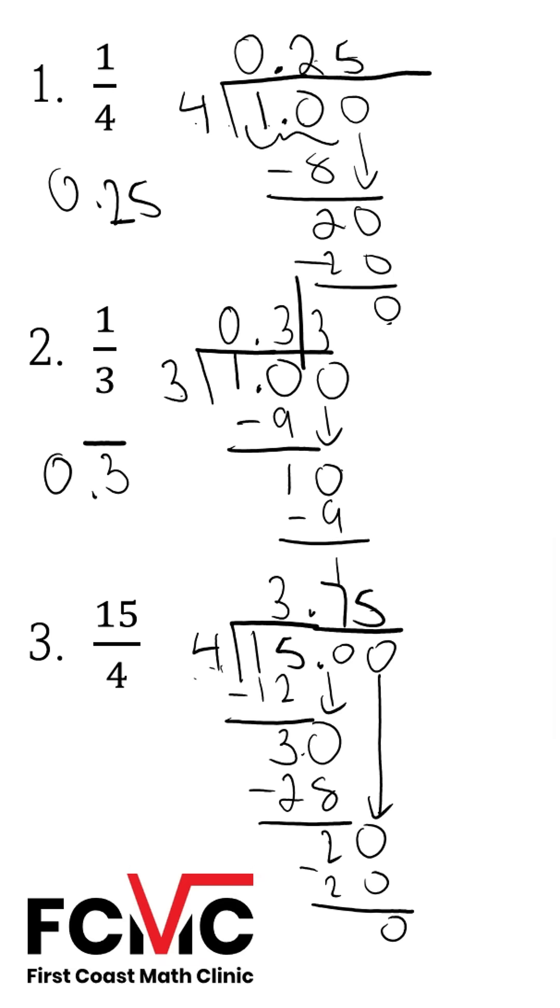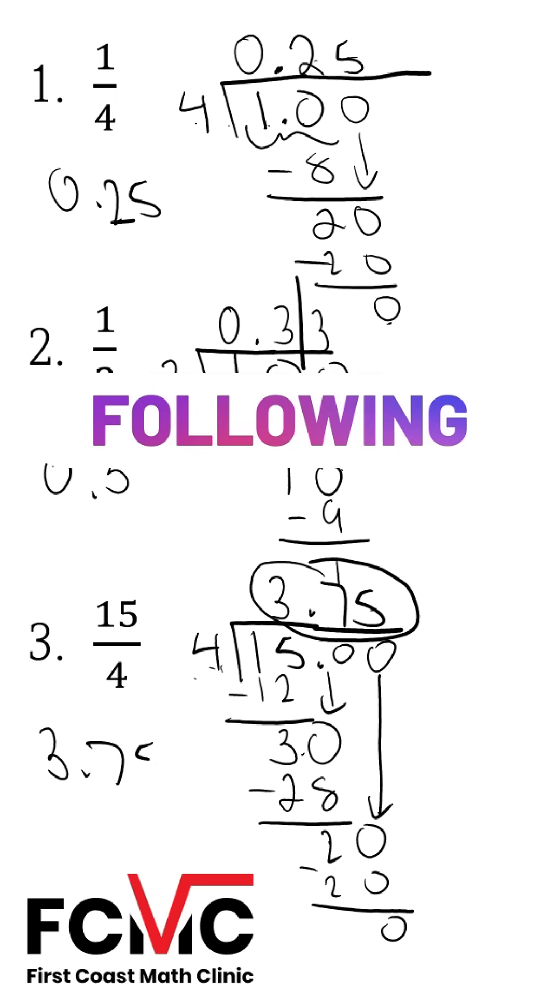Since we have a zero, our division's finished, and our answer is going to be 3.75 or 3 and 75 hundredths. And that's how we convert fractions to decimals.